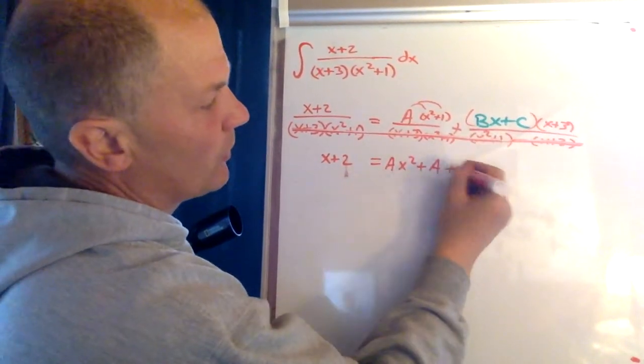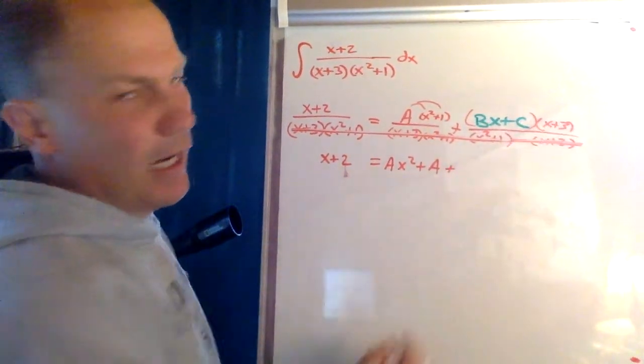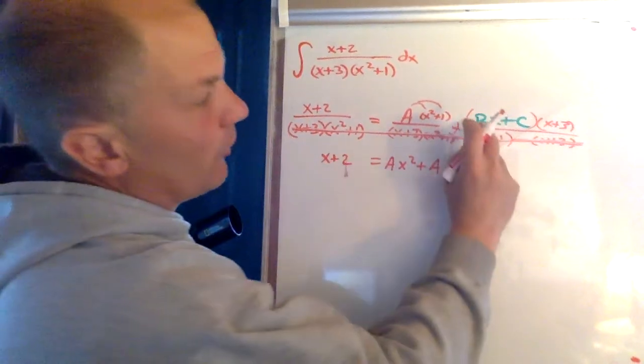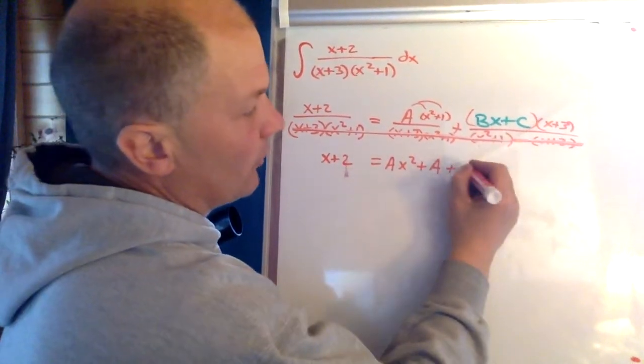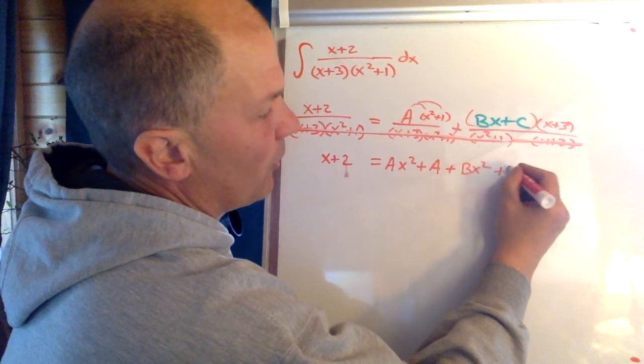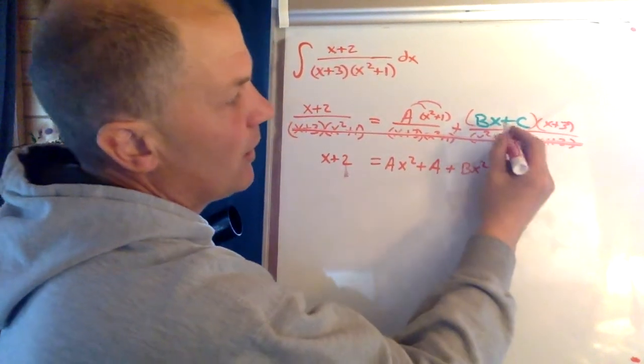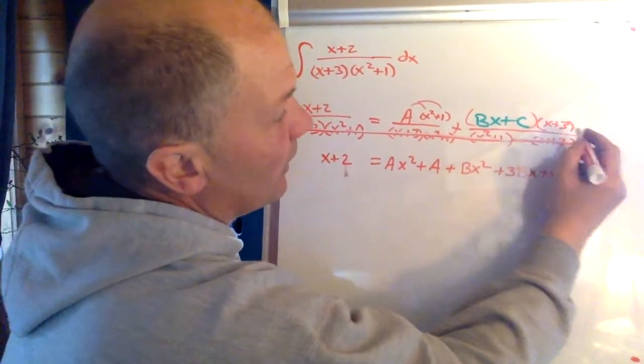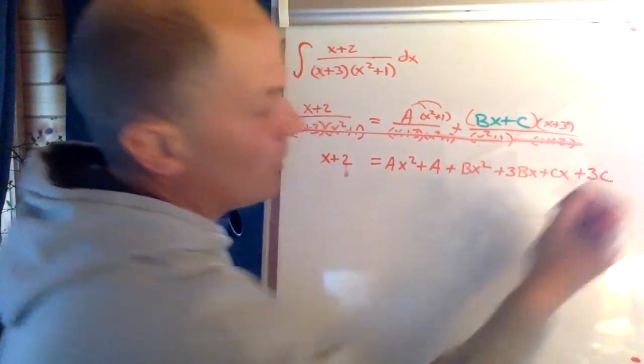I am going to distribute this. When I do, I need to remember to FOIL because I'm dealing with two binomials. So bx times x is bx squared. bx times 3 is plus 3bx. c times x is plus cx and c times 3 is plus 3c.